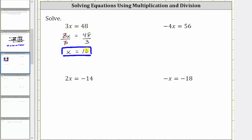Let's go ahead and check this. If we substitute 16 for x, we have three times 16 equals 48, and three times 16 is indeed 48. 48 = 48 is true, verifying the solution is correct.